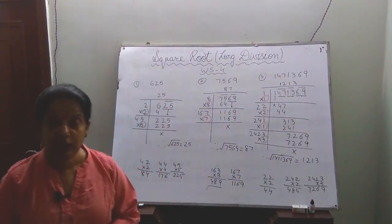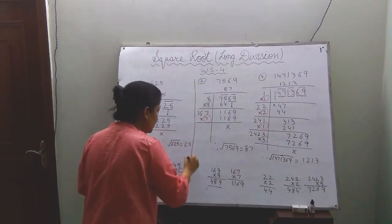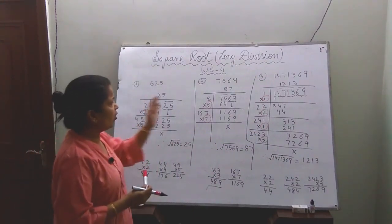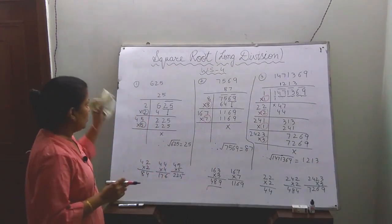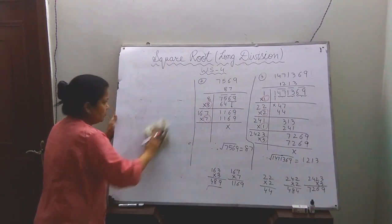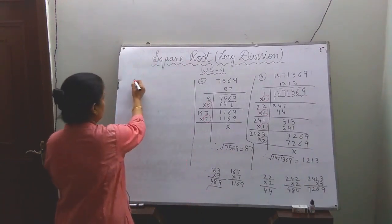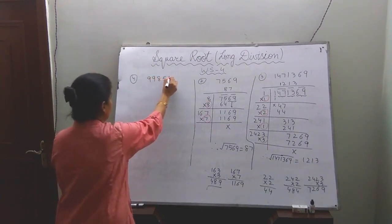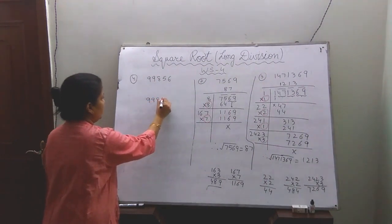This is the easiest method to find the square root of any large number. With the long division method, you can find the square root of any big number. So now we will take another question. The number is 99856.